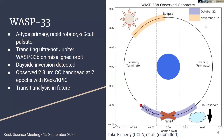We decided to start with the WASP-33 system. It's an archetypal hot Jupiter with a 1.2-day polar orbit. We observed for two nights: first pre-transit, then a full transit and post-transit, looking at the nighttime emission spectrum of the planet. We left the transiting data for later. About a month later, we re-observed just after secondary eclipse to get the day-side spectrum of the exoplanet.